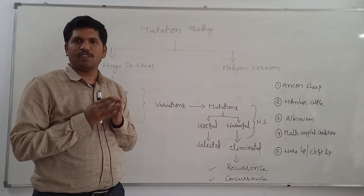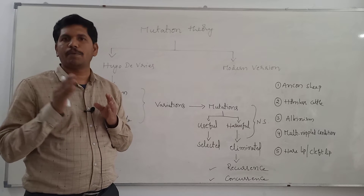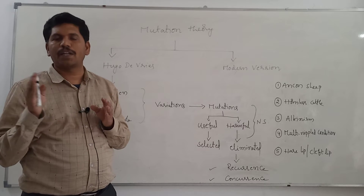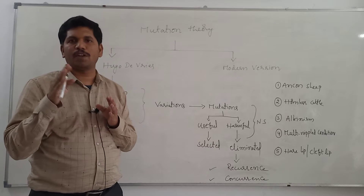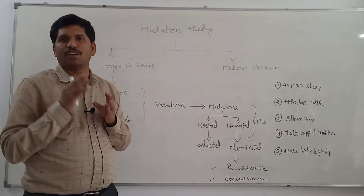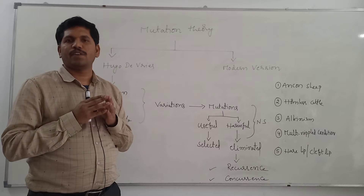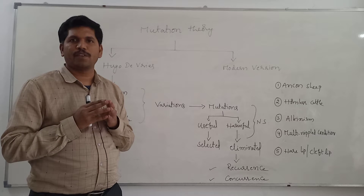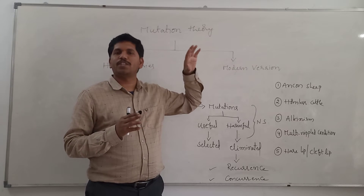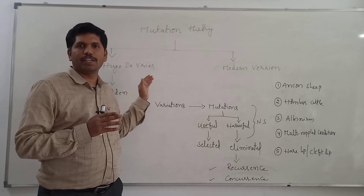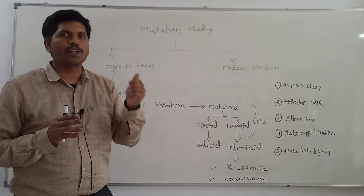The mutation theory was proposed for the first time by Hugo de Vries in the year 1901 after conducting experiments on a plant by name Oenothera Lamarckiana. Later, a number of changes took place in the field of molecular biology and Mendel's laws were announced. After the incorporation of Mendel's laws and the developments in molecular biology, that mutation theory of Hugo de Vries is called the modern version of mutation theory — the modified mutation theory incorporating Mendel's laws of inheritance and developments in molecular biology.